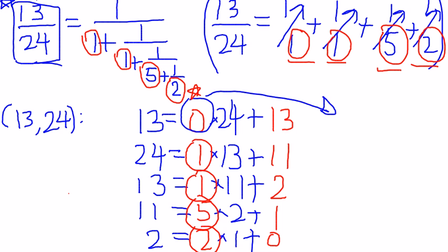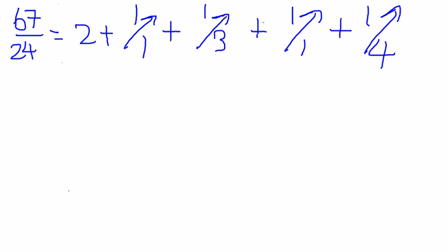And please look at the second example here. How about 24 and 67? So we are able to get that we have the continued fraction decomposition for 67 over 24.